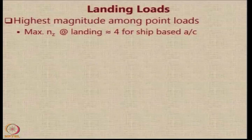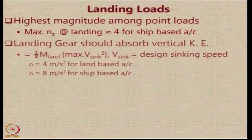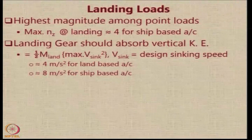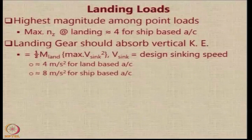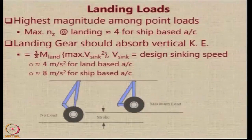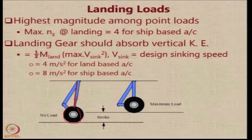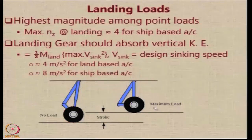Landing loads generally have the highest magnitude among all point loads. For a ship-based aircraft, the vertical load factor at landing is assumed to be 4, because the landing gear must operate when the aircraft is coming down while the ship is also moving up. The landing gear must absorb the vertical kinetic energy, and the effective sink speed is a major factor affecting the landing gear load. The sink speed is assumed to be 4 meters per second for land-based aircraft and 8 meters per second for ship-based aircraft.